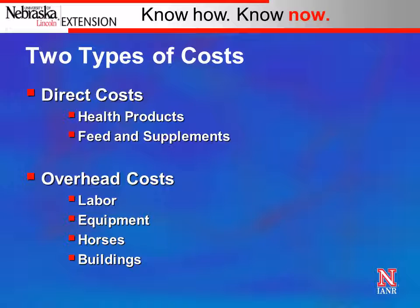There are two types of cost in the numerator as we think about unit cost production for cow-calf operations. Direct costs are those that increase incrementally for each calf produced or each cow in production — things like vaccines, protein supplement, salt, and mineral. If we add a cow, we expect to buy another unit of vaccine, more supplement, more mineral. Overhead costs are things that don't change as rapidly with cow numbers — like labor, equipment, horses, and buildings.